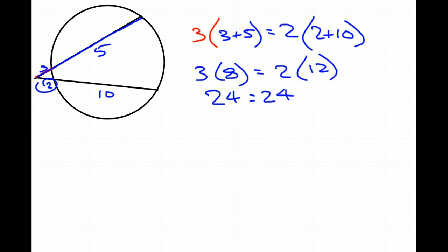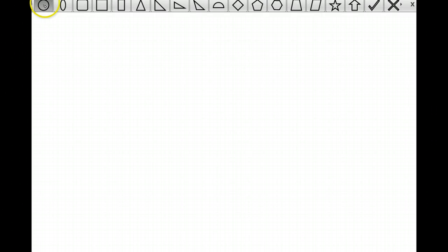So again, if we're given one of these where we don't have all the information, we can still find the length of part of the cord, or the secant. So let's say we've got that, and then we've got that. I'm going to say this is 4, this is x, this is 3, and this is 5.